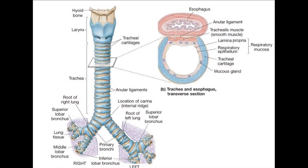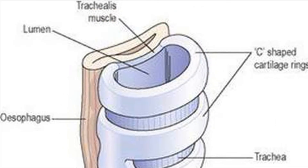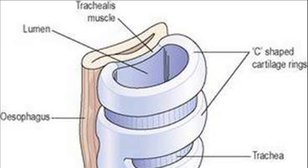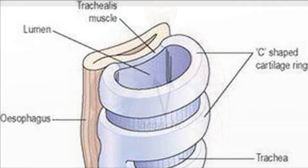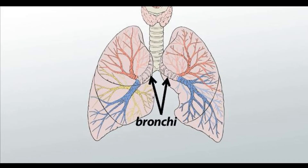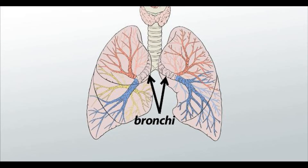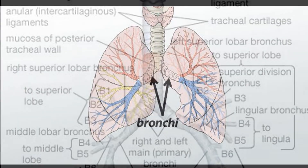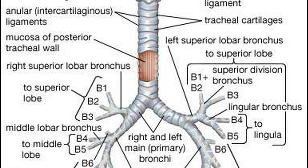Trachea or windpipe. The trachea is a 12 cm muscular tube made up of C-shaped rings of cartilage. The lumen, that is the inner open space of the tube, is kept open by the cartilage rings. Bronchi. The trachea divides and enters each of the two lungs as a bronchus. Bronchioles. Each bronchus divides into smaller branches called bronchioles.